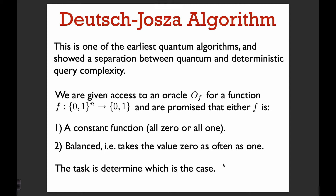So what's the setup? It's in the oracle model, so we're given an oracle to a function f, and we're promised that this function is either a constant function — so f of x is always 0 or f of x is always 1 — or f is balanced, meaning it takes on the value 0 as often as it takes on the value 1. We're given O_f and want to use it as few times as possible to determine which case we're in.